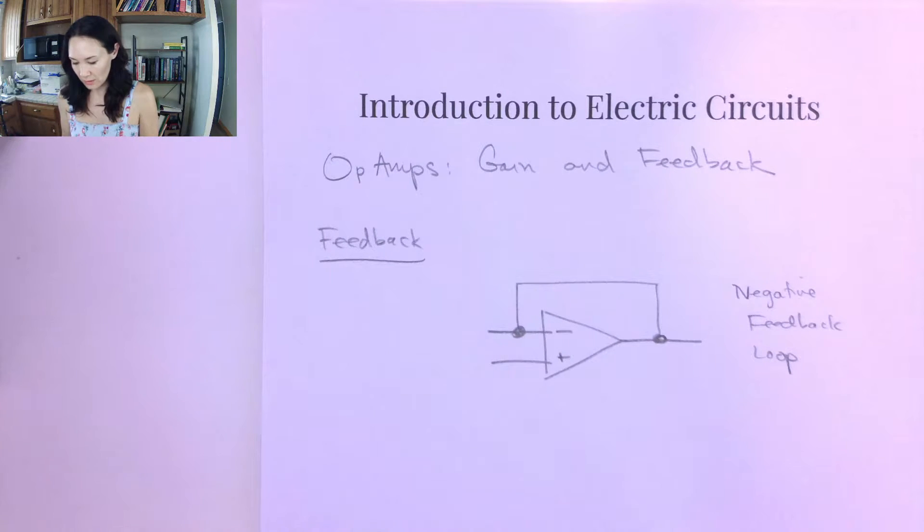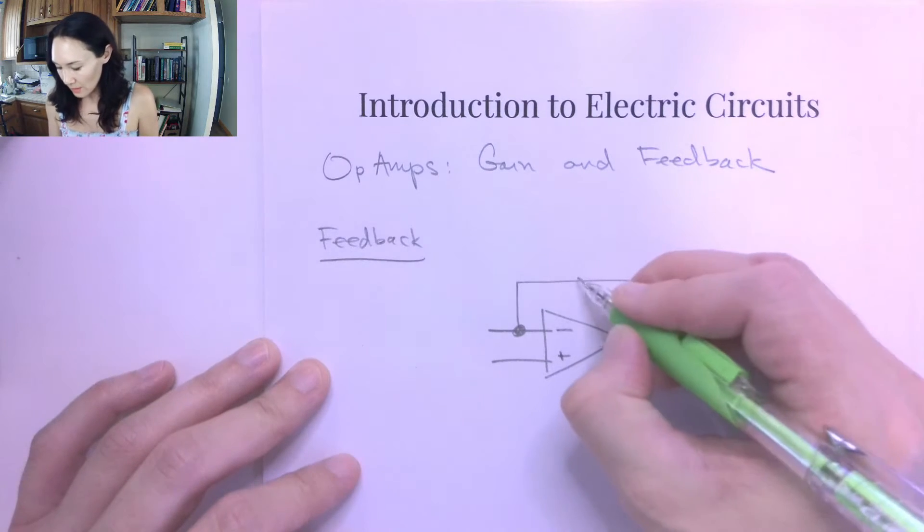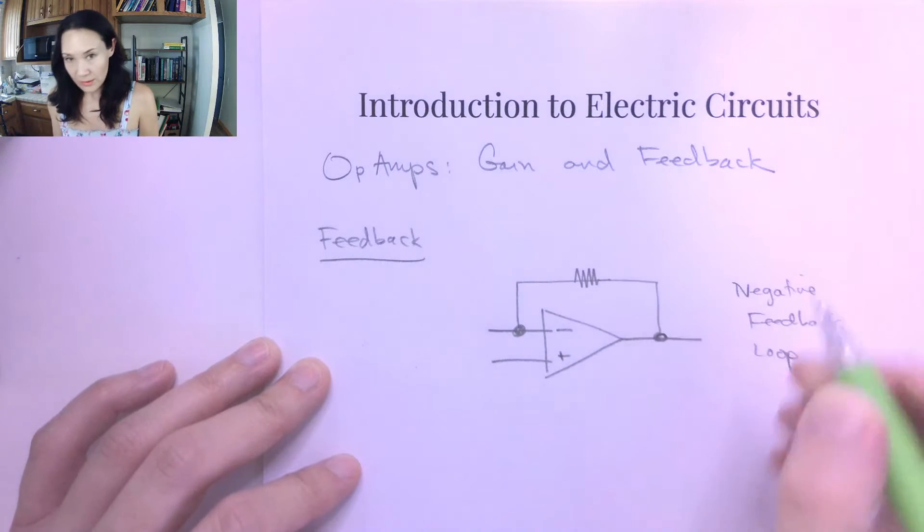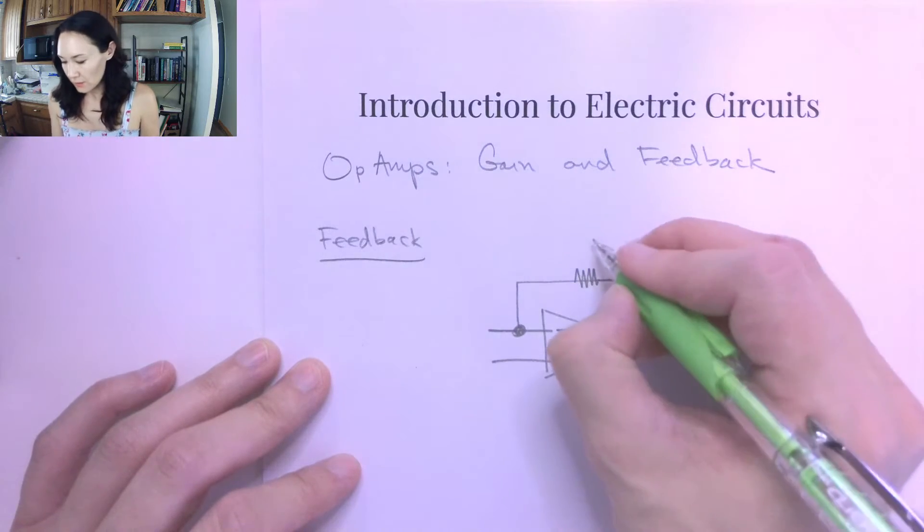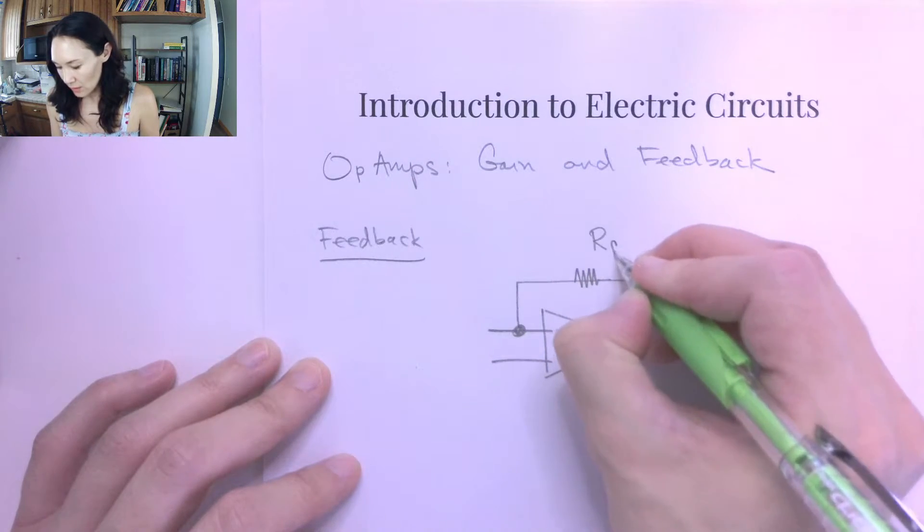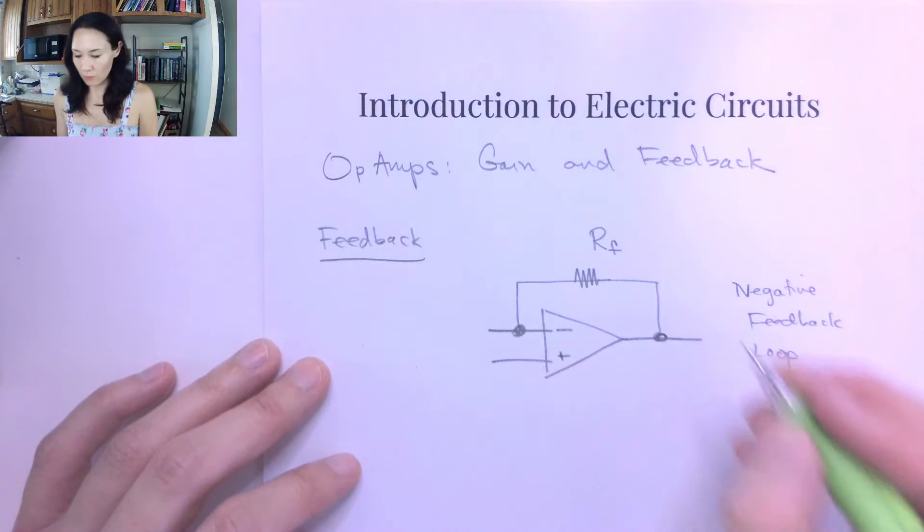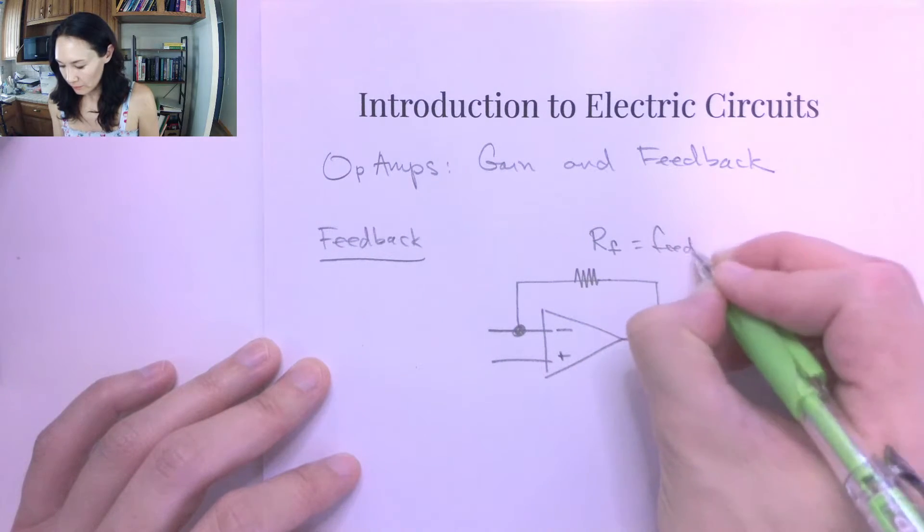So it's kind of one of the specifications of the ideal operation for an op amp is it needs a negative feedback loop. So we're going to see this quite a lot. Sometimes you'll also see a resistor in this loop, and if so, that's called the feedback resistor, and I'll label that R sub F for feedback resistor.